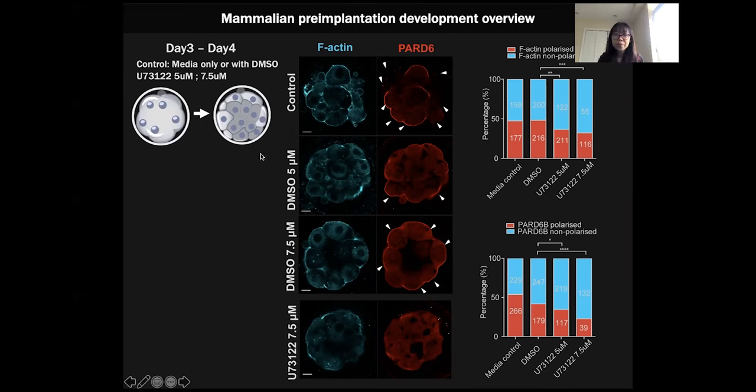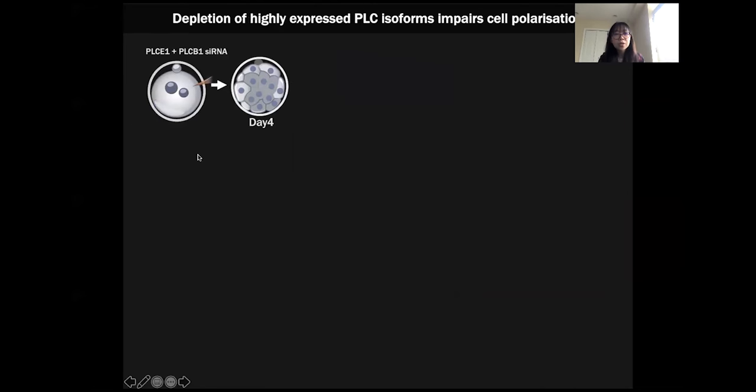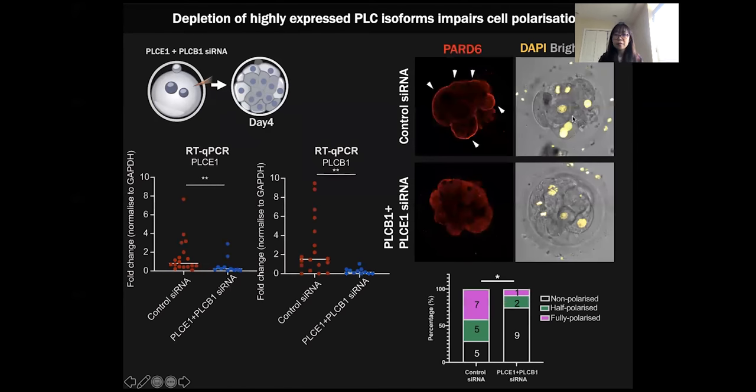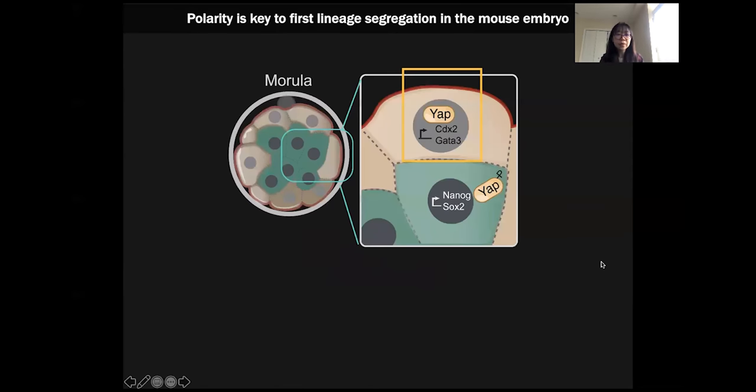This is pharmacological treatment and has potential off-target effects. In a second approach, we used siRNA to downregulate two highly expressed PLC isoforms—in this case, PLC epsilon and PLC beta 1. We did qPCR to verify that these siRNAs can give very high knockdown efficiency. We found that siRNA-treated embryos, similar to inhibitor-treated embryos, also lost the apical polarization of Par6. These two sets of experimental approaches and results suggest that PLC is also important for the human embryo to polarize, similar to that of the mouse.